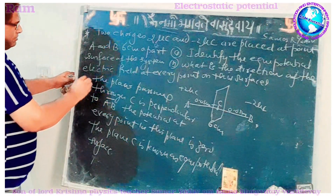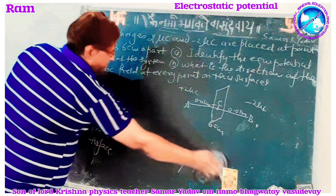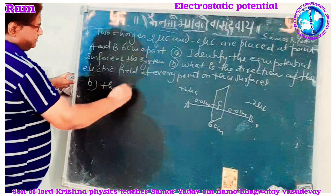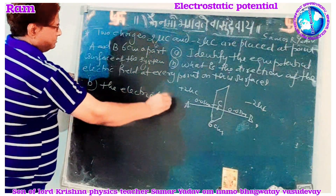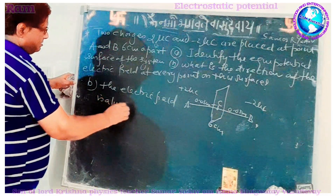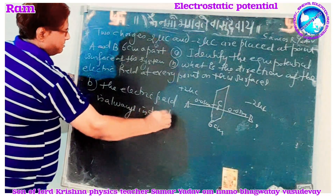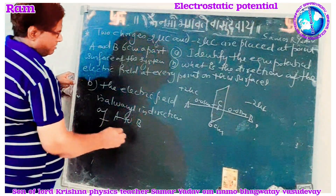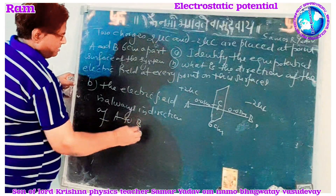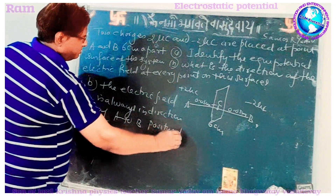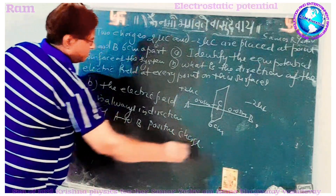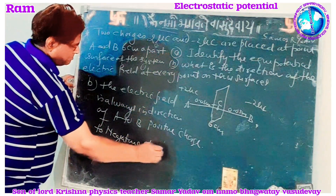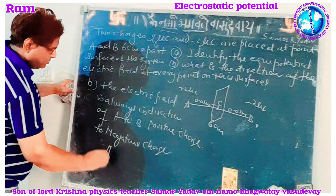Now for part B: we know that the electric field is always in the direction from A to B — that is, from the positive charge to the negative charge. So the direction of the electric field here is from A to B.